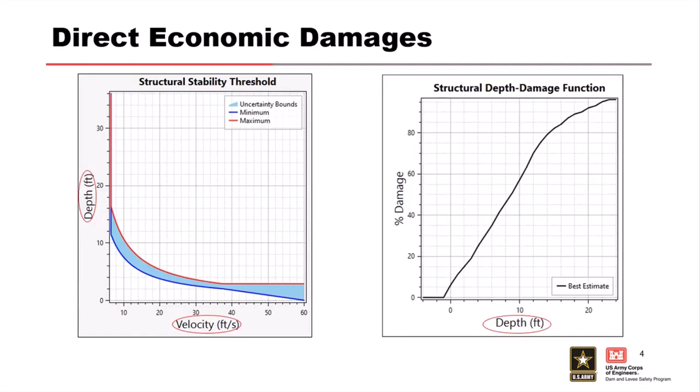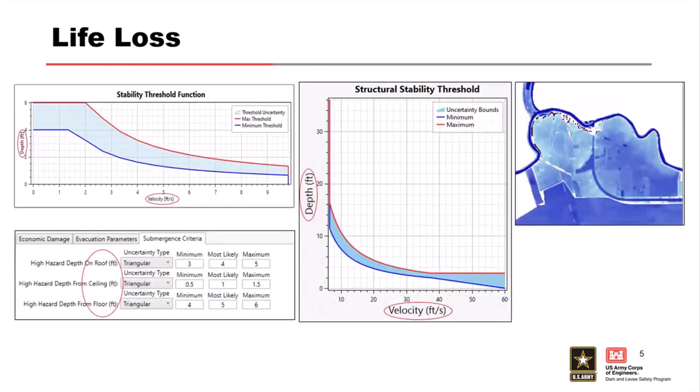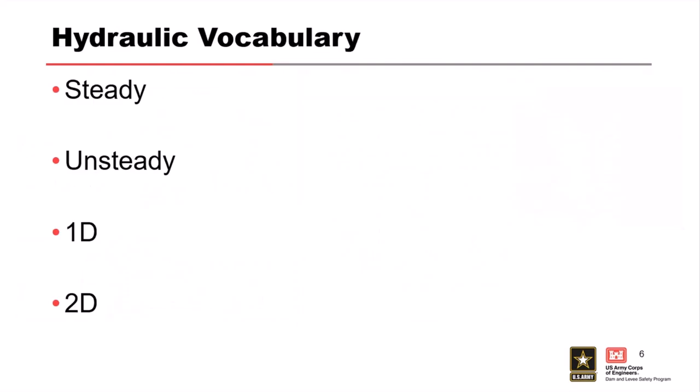Also, for economic damage, the structural depth and hydraulic variables show up there. So to inform those functions, we build the RAS model and hand it over to LifeSim. Moving on to hydraulic vocabulary — these are the four words I decided were most important for people to understand because they get talked about when you're scoping a study. For LifeSim, there might be existing models that fit these descriptions and you're going to have to help decide: is that appropriate? Do we need more? Do we need less?